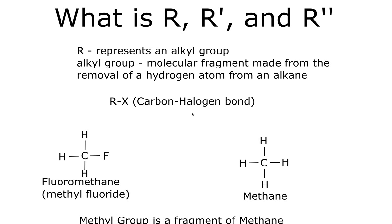In this video I'm going to explain what the symbol R means in organic molecules. R represents an alkyl group. An alkyl group is a molecular fragment made from the removal of a hydrogen atom from an alkane.